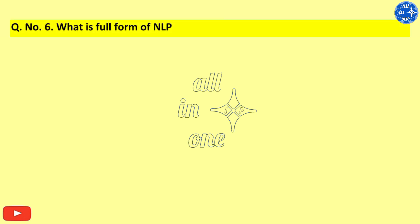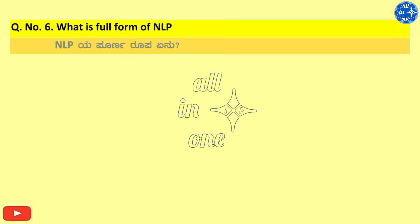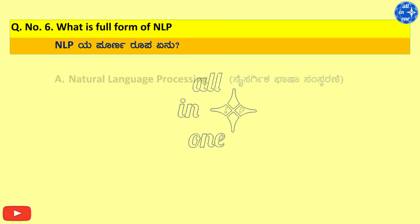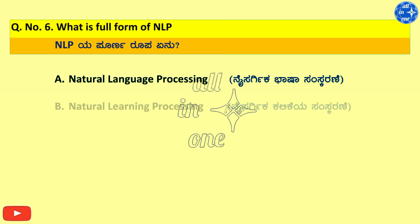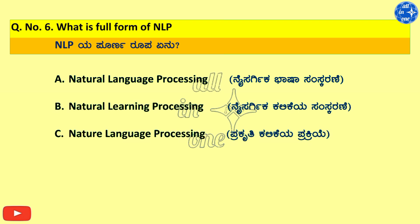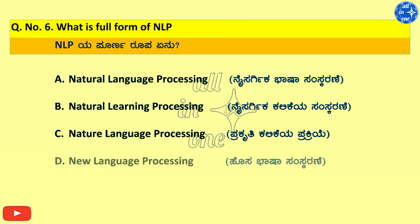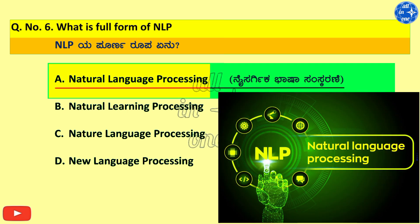Q6. What is the full form of NLP? A. Natural Language Processing, B. Natural Learning Processing, C. Nature Language Processing, D. New Language Processing. Right answer is A. Natural Language Processing.